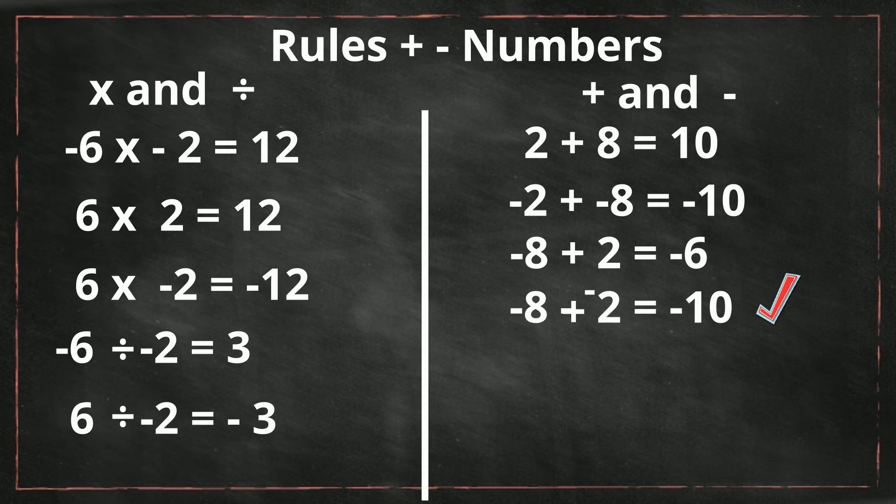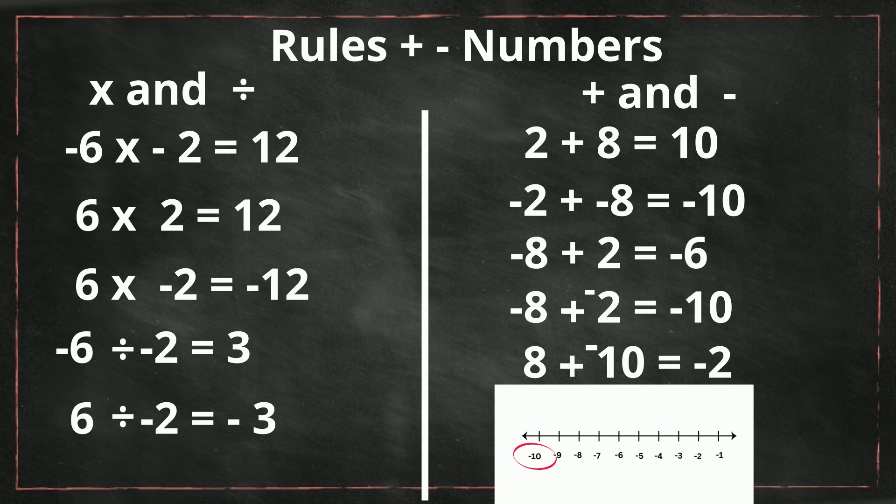How about this? We have 8 minus 10. We'll convert it to an addition problem. So it becomes 8 plus a negative 10. Remember, we're going to subtract the 8 from the 10 and keep the sign of the larger number. So it becomes 10 minus 8 equals negative 2.